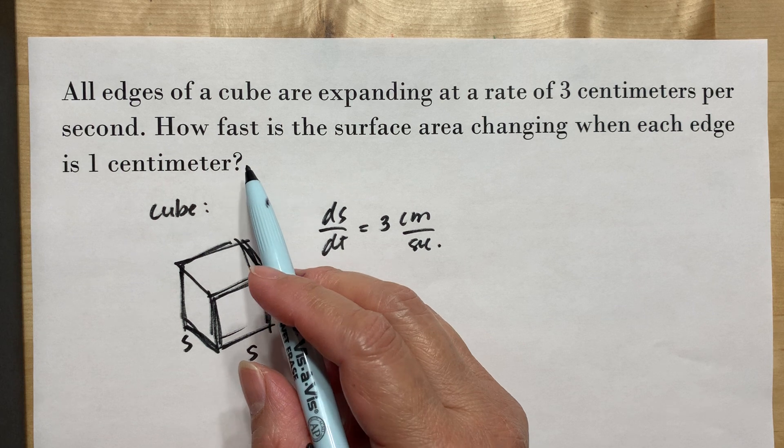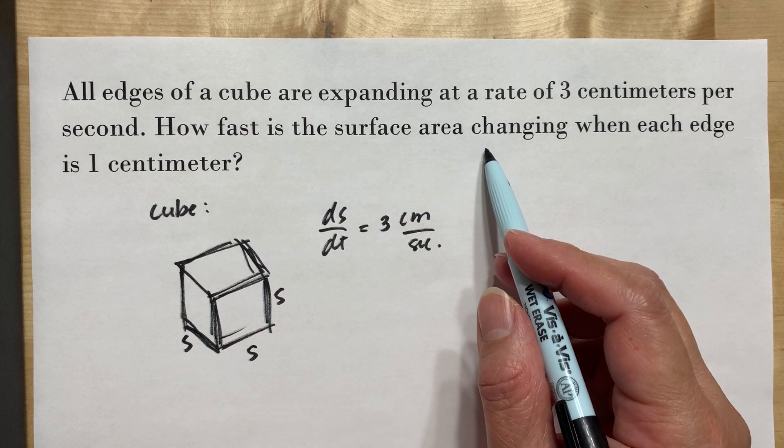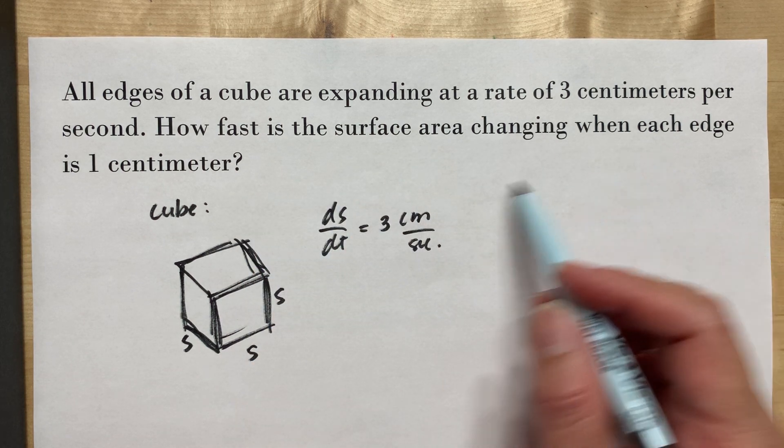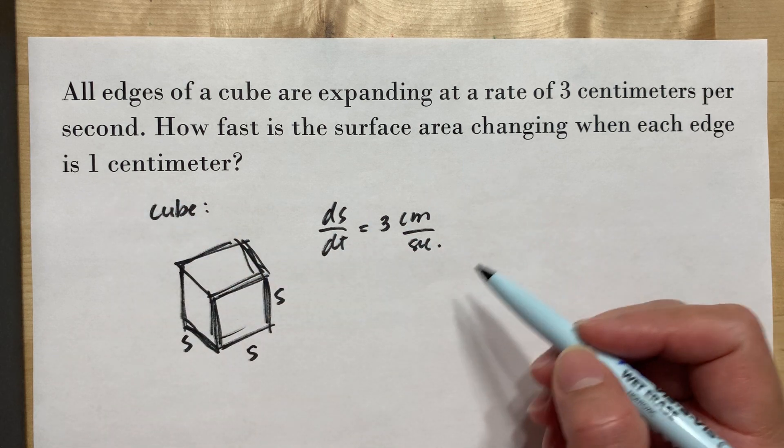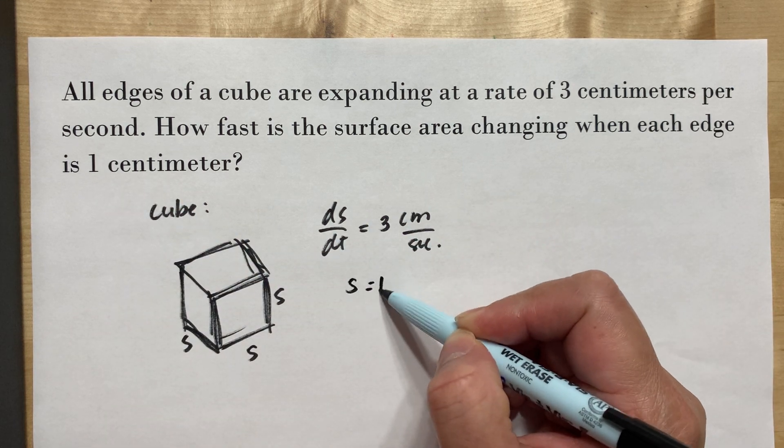Now, it says here, how fast is the surface area changing when the edge is 1 cm? Meaning the side is 1 cm.